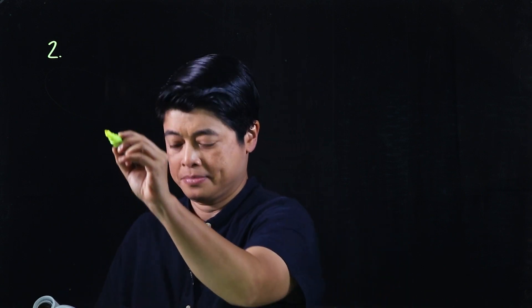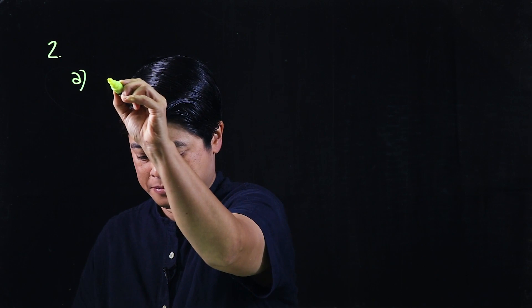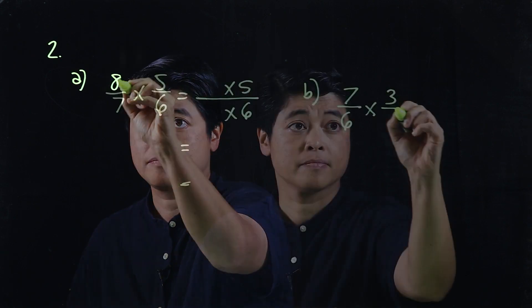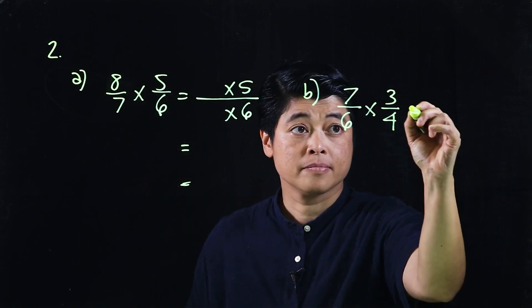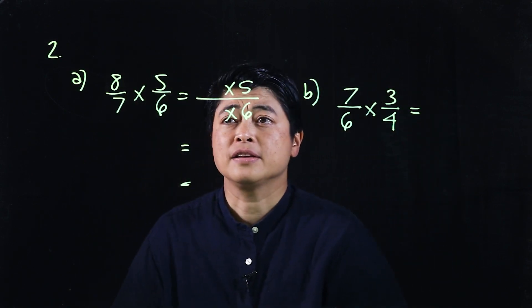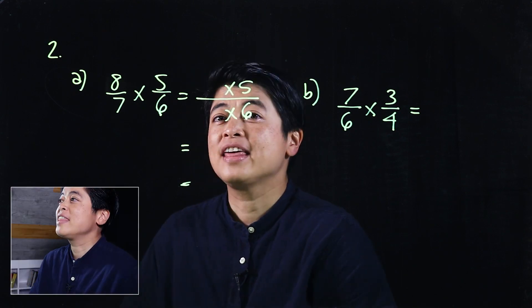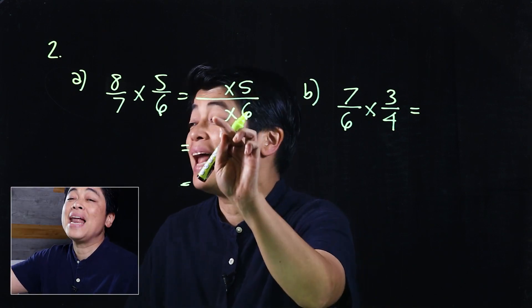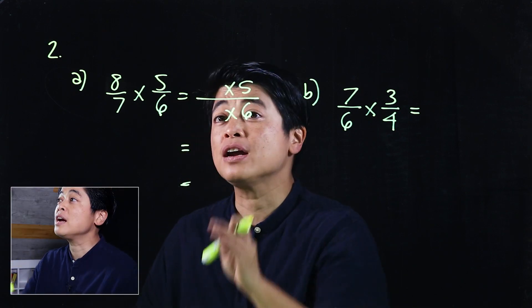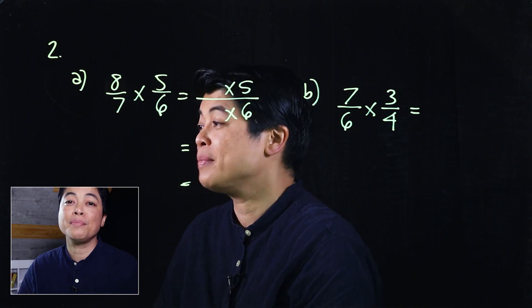Our problems will come from page 77, which says to multiply and express answers in simplest form. In letter (a) there are blanks to fill in, so we have no choice but to follow Method 1.